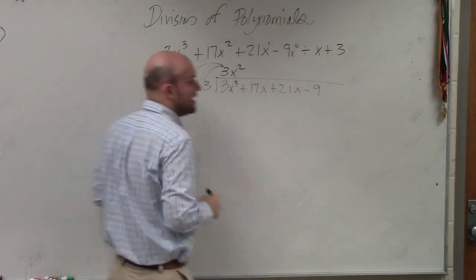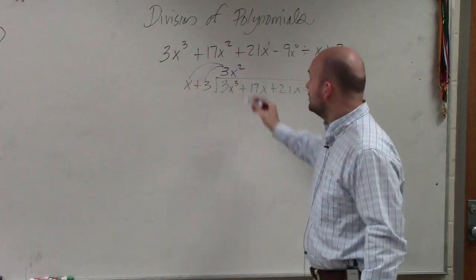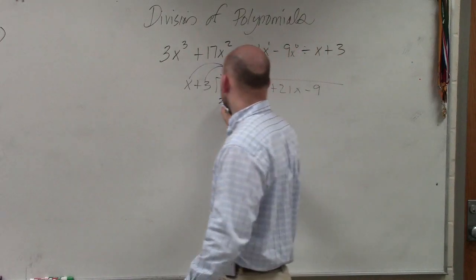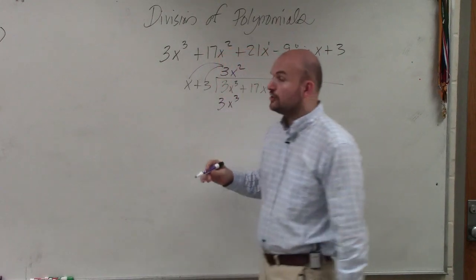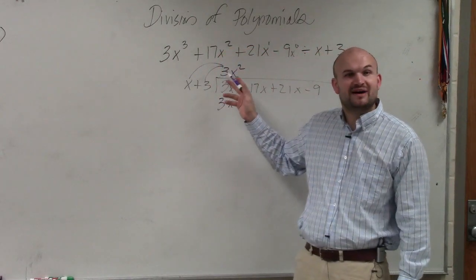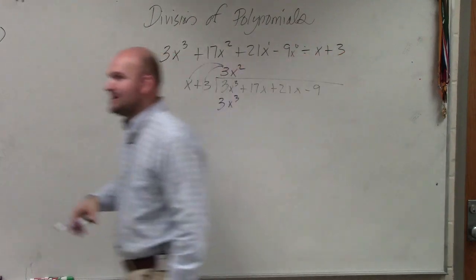Then we multiply that term times both of our divisors. 3x squared times x is 3x cubed. If you guys haven't already noticed, when you multiply how many times that divides into it, you should always get the exact same value.